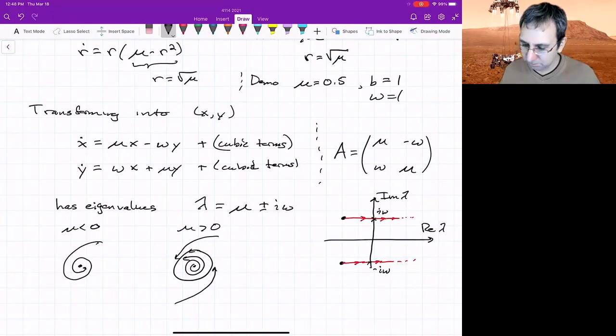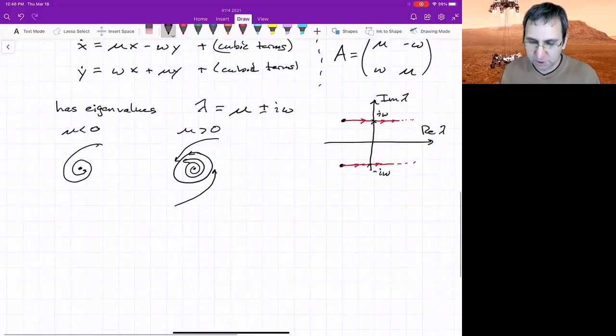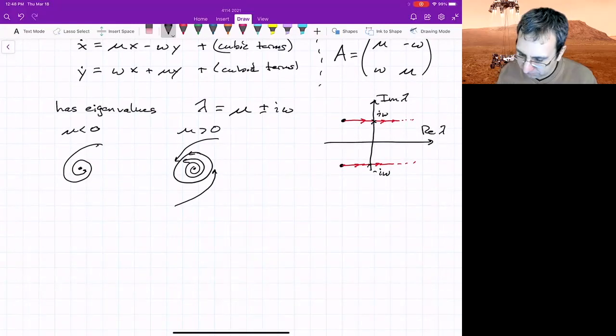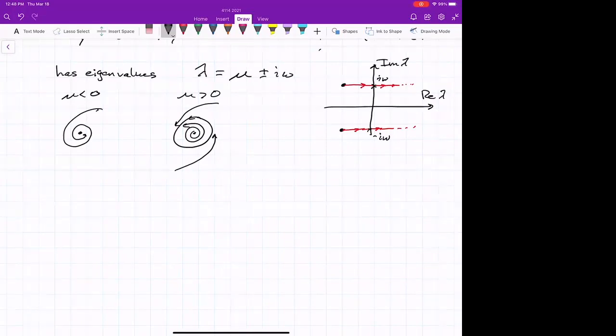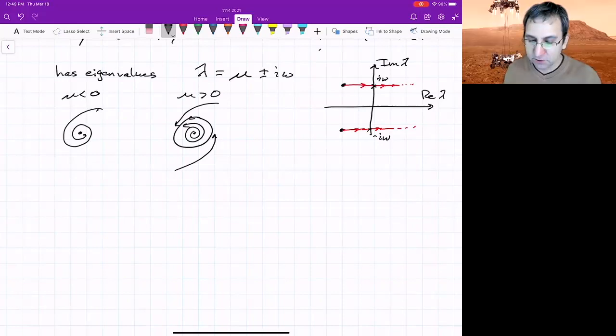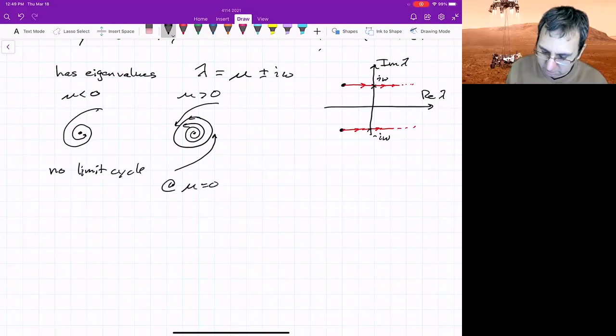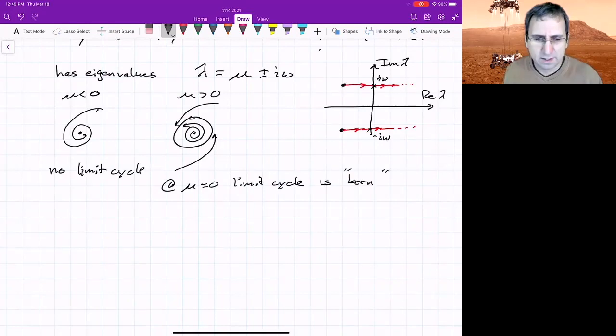You could see the picture that we get. If we had mu less than zero, things would be just spiraling in, and like I have up there, mu greater than zero, they're spiraling to this limit cycle. That's the supercritical. Now we'll talk about the subcritical, and then compare the two. So for mu less than zero, is the limit cycle not going to be visible or something like that? For mu less than zero, there is no limit cycle. Okay, got it. So at mu equals zero, the limit cycle is born.